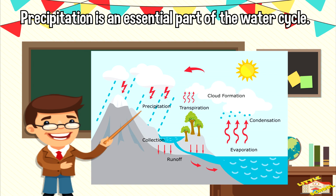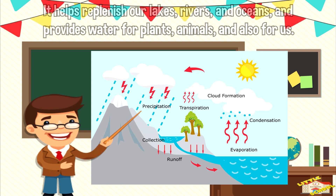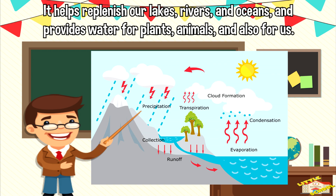Precipitation is an essential part of the water cycle. It helps replenish our lakes, rivers, and oceans, and provides water for plants and animals and also for us.